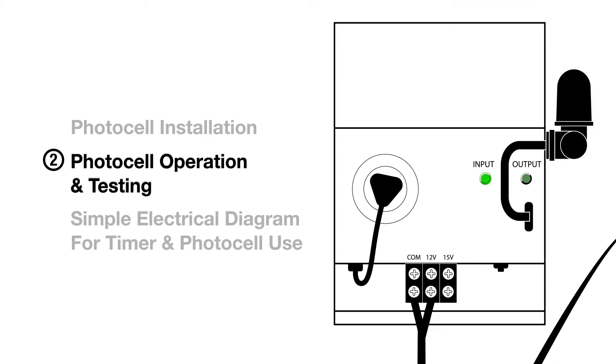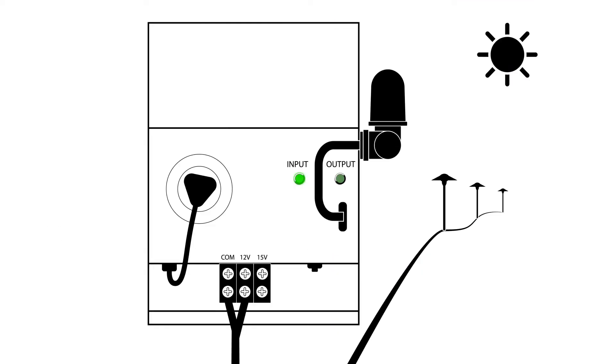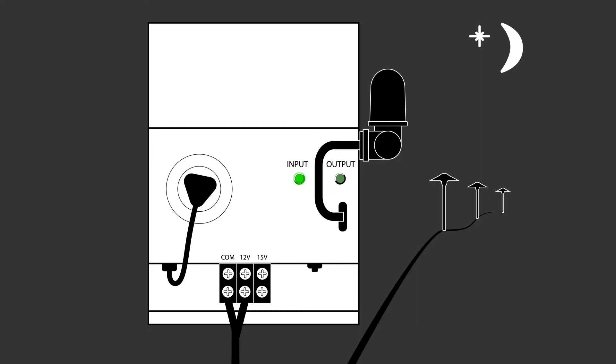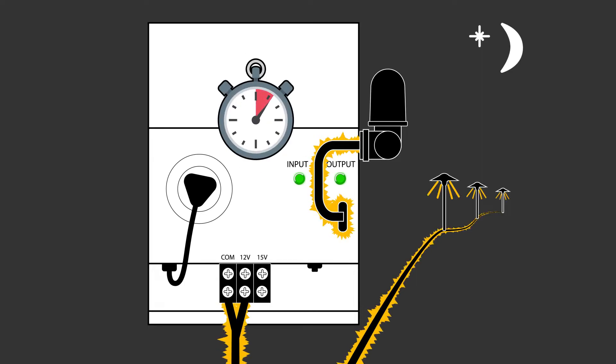Photocell testing. The first thing to know, a photocell is just a switch controlled by light and very slow to react. It can take as long as five minutes to turn on or off.